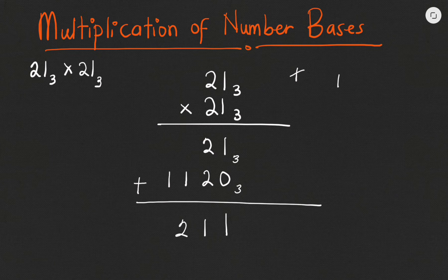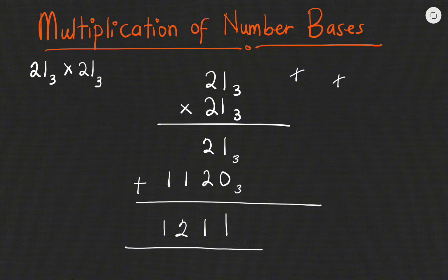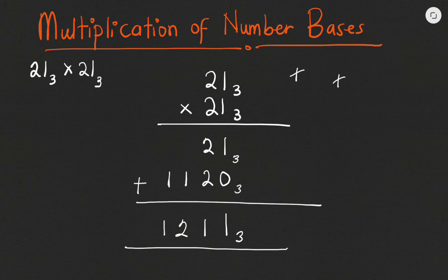We write down 2 with nothing carried, then bring the 1 from the front. So my final answer is 1211 base 3. This becomes my final answer after multiplying 21 base 3 by itself. Let's have a look at another example.